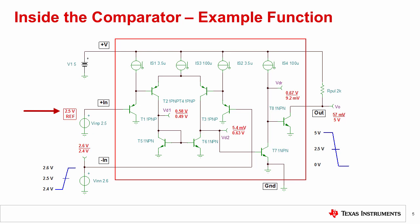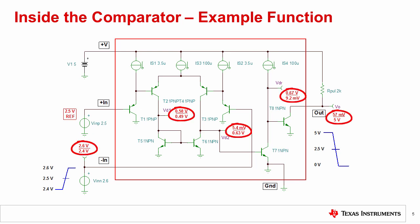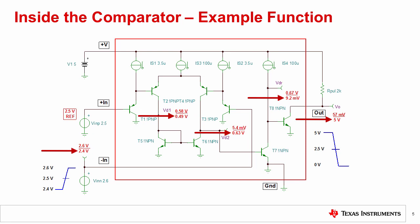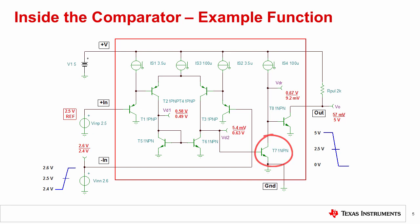Let's first apply a 2.5 volt reference voltage to +IN and a 2.4 volt input signal to -IN, so we are comparing 2.4 volts against a 2.5 volt reference. The voltages are shown in red on each of the nodes. Looking into -IN, the transistors connecting to that side of the differential input pair connect to dynamic load transistor T6. The voltage at the collector of T6 is equal to 0.63 volts, clamped by the base-to-emitter voltage of transistor T7. Transistor T7 is now on, which turns transistor T8 off by pulling down its base voltage.